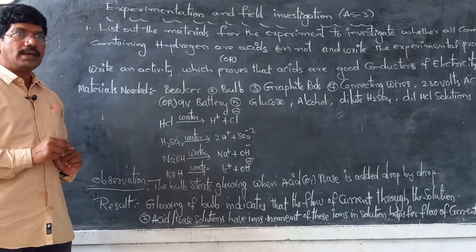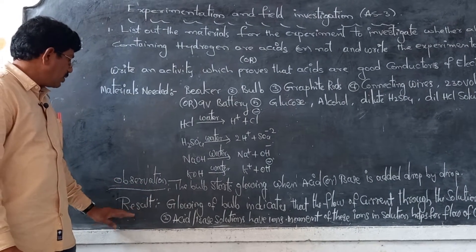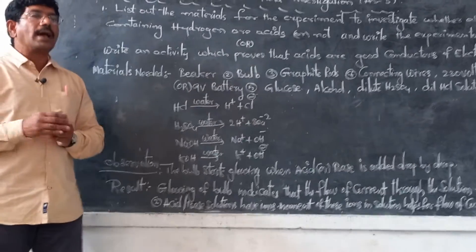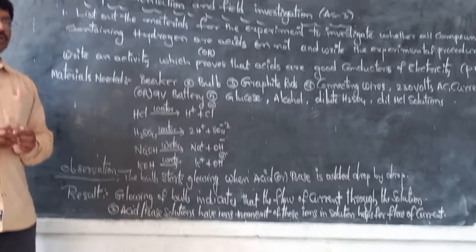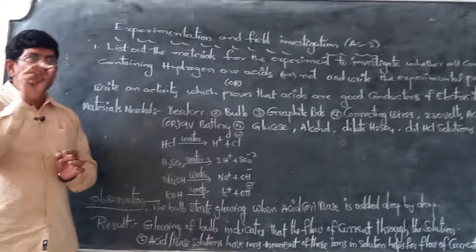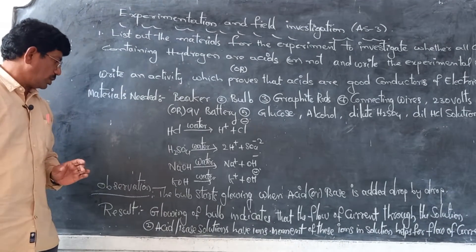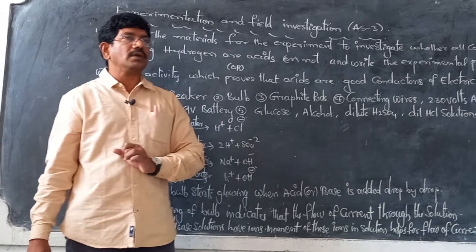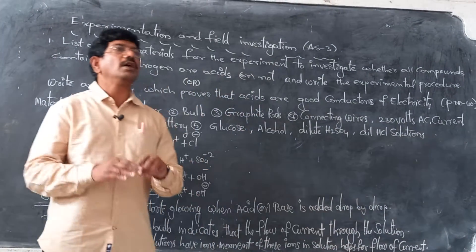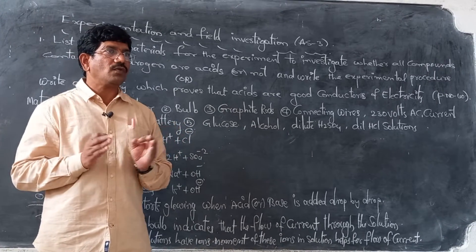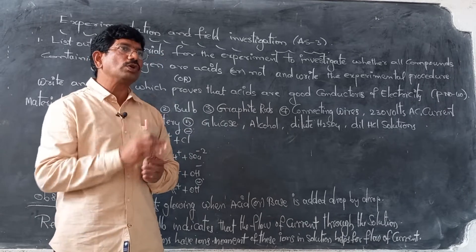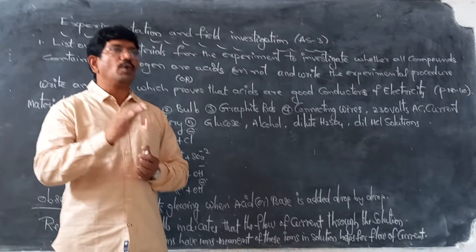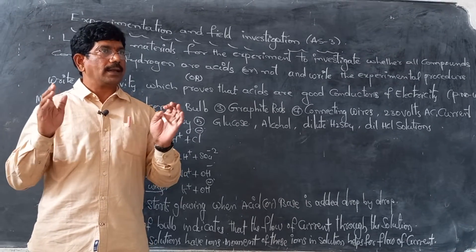What we observed in this experiment: the bulb starts glowing when acid or base is added drop by drop to distilled water. The inference: glowing of the bulb indicates the flow of current through the solution. The mobility of ions is responsible for the passage of current. Acid, base, and salt solutions have movement of ions, which allows current to pass through.